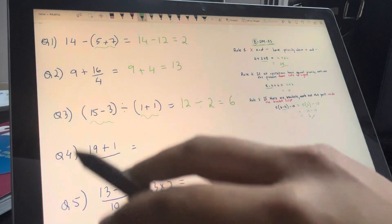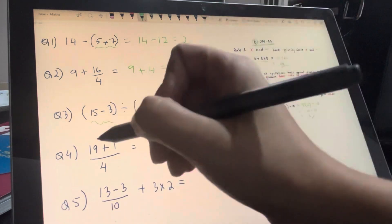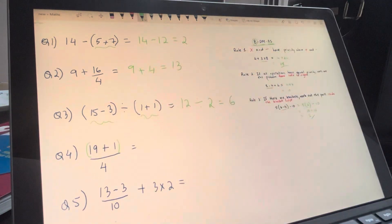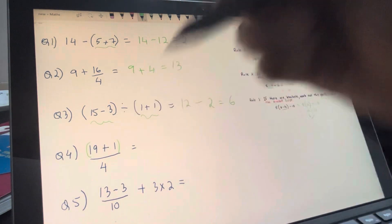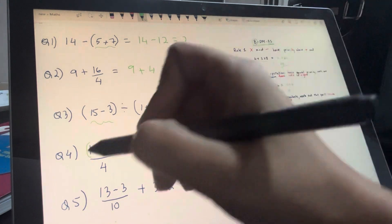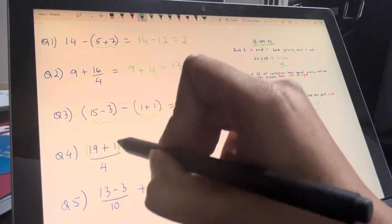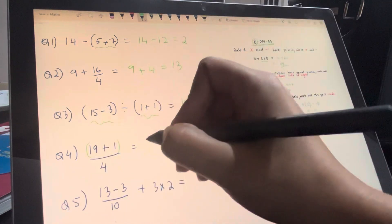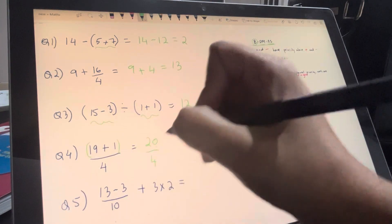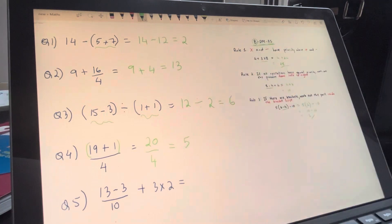Now when we have a question like this, remember that there is an imaginary bracket around that. So we don't write it in, but anytime you've got a numerator over a denominator, there's like a bracket around it. So 19 plus 1, that's going to be 20, divided by 4, and then that's 5.